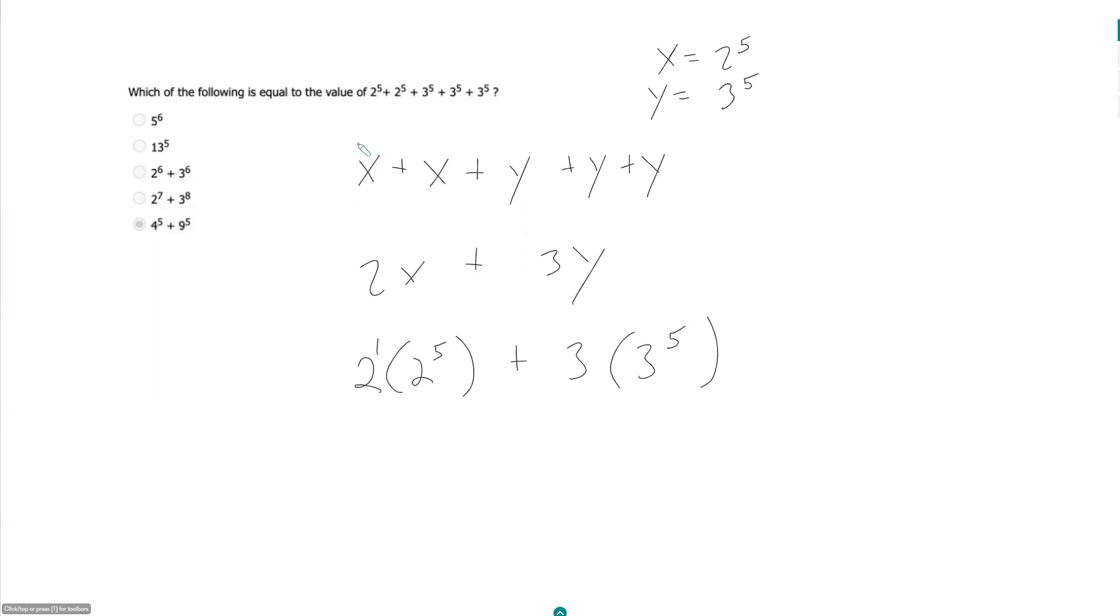And we could think of this as 2 to the first times 2 to the fifth and 3 to the first times 3 to the fifth. So multiplying exponents with the same base, we just add the powers.